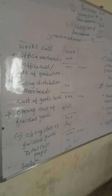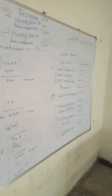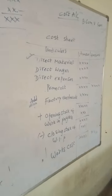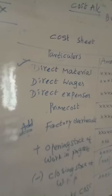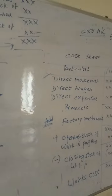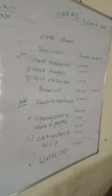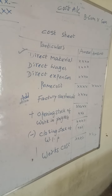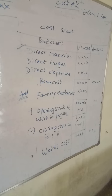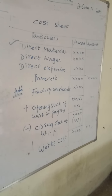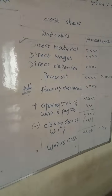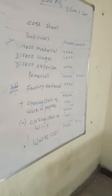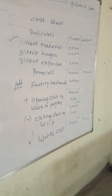In today's class, I will explain the cost sheet. For direct material, we take purchase of raw material plus opening stock of raw material, less closing stock — this gives material consumption. Adding direct wages and direct expenses gives prime cost.